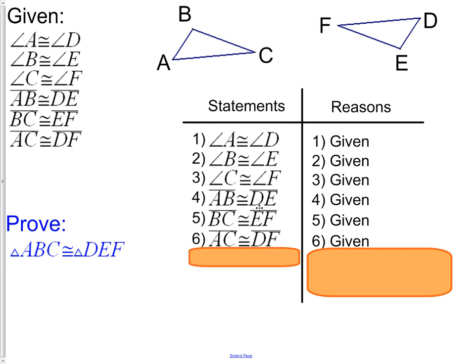Now, a good thing to do is to mark the figure with that given information. So we have angle A congruent to angle D. We have angle B congruent to angle E. And so forth. We go around the rest of the figure and name all of those angle congruencies. We now have three angles in the first triangle congruent to three angles in the second triangle.